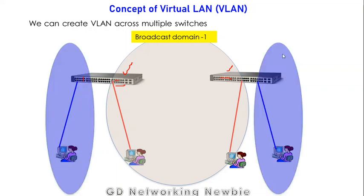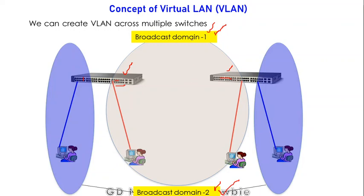Similarly, the remaining ports from both switches can be combined into a second broadcast domain. So we have broadcast domain one and broadcast domain two — which means VLAN one here and VLAN two here. Using multiple switches, we can also create multiple VLANs. This is how VLANs are created with the help of switches. In the next part, I will discuss the advantages of creating Virtual LANs.